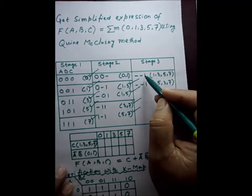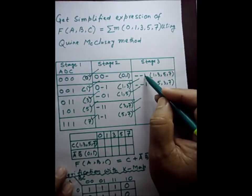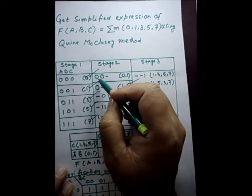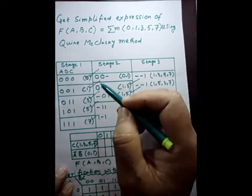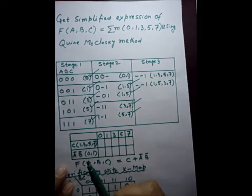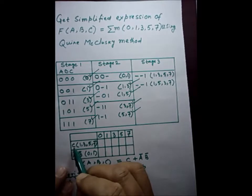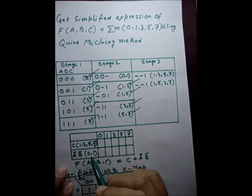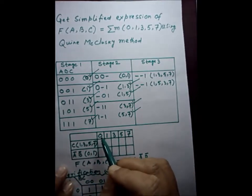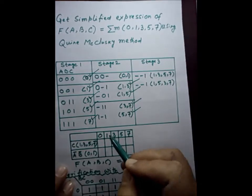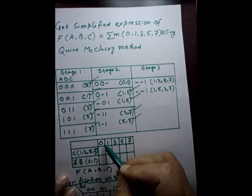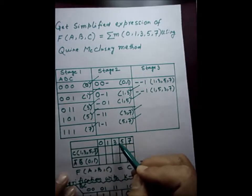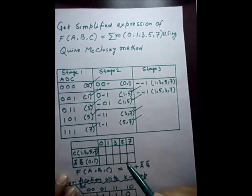Here the prime implicants are C, and A̅ and B̅. Because both results are the same, it is C, and the other is A̅B̅. Therefore we are making a prime implicant table. We write the prime implicants C and A̅B̅ with their decimal numbers in brackets. Here we write the minterms: 0, 1, 3, 5, 7.